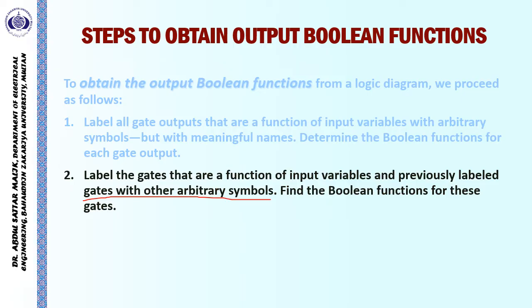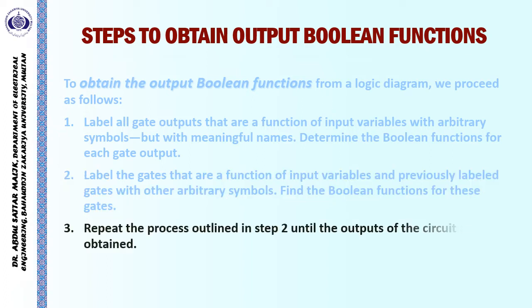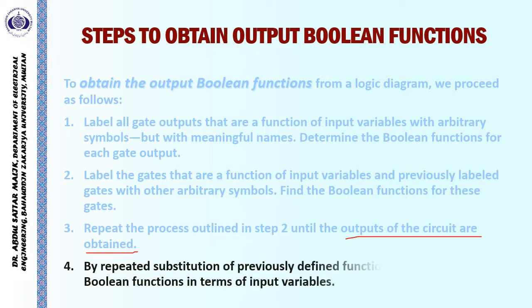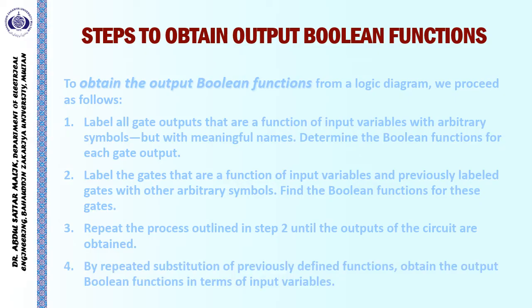And again, we find the boolean functions for these gates as well. In the third step, we repeat the process outlined in step 2 until the outputs of the circuit are obtained. And during the last step, by repeated substitutions of previously defined functions, we obtain the output boolean functions in terms of input variables.